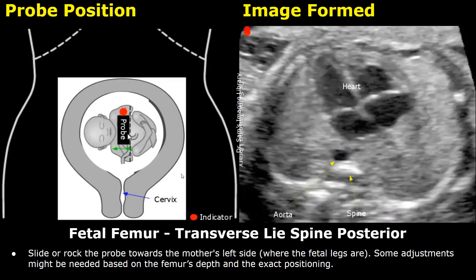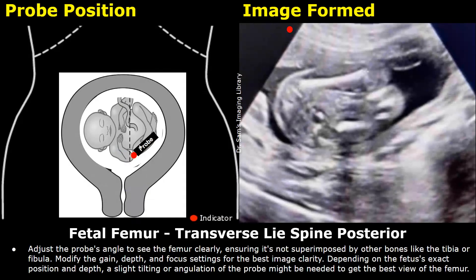This is a fetus in a transverse lie with a posterior spine. The head is towards the mother's right side and the legs are towards the mother's left side. This image is taken at the level of the heart, with the spine seen in the lower half of the image. To find the fetal legs, move the probe towards the mother's left side. Adjust the probe's angle to see the femur clearly, ensuring it is not superimposed by other bones like the tibia or fibula. Modify the gain, depth, and focus settings for the best image clarity.